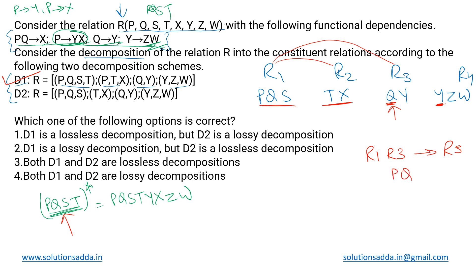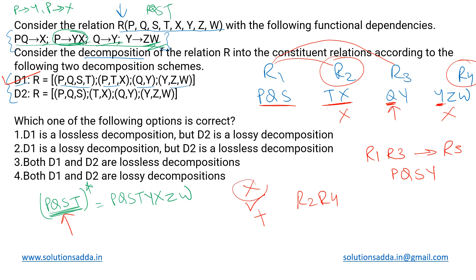Checking R2 and R4: they cannot be merged because there is no common attribute between them. Merging R2 and R4 would be lossy — meaning some tuples may be eliminated or extra tuples added that were not in the original relation. Both scenarios are considered lossy decomposition.